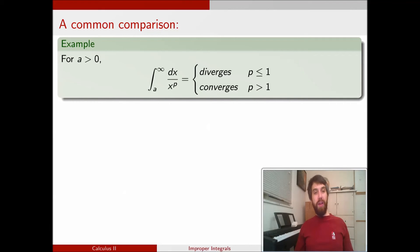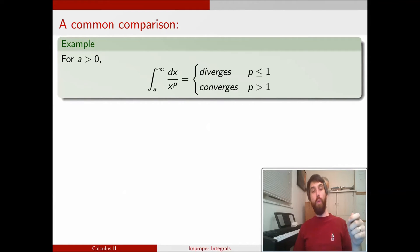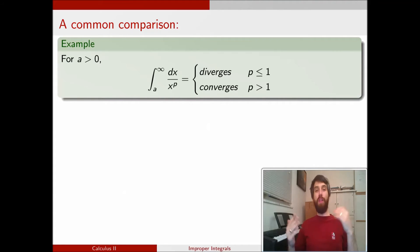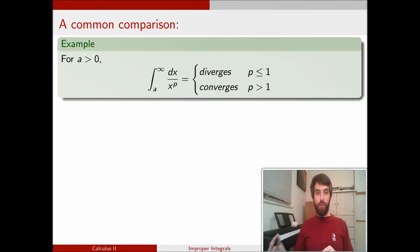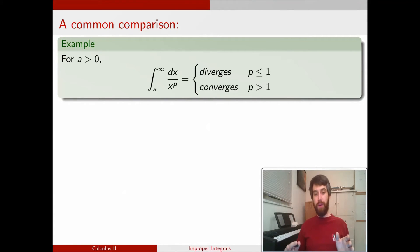One family of integrals that we have studied is the integral from a — some positive number — up to infinity of 1 over x to the p. We know when these are going to converge and when they're going to diverge depending on the value of p. So if we have some other integral, this is going to be one of the standard things that we're going to compare it to.